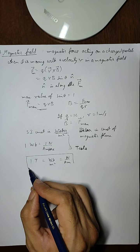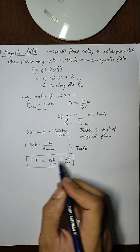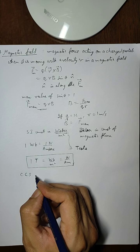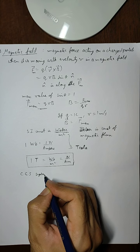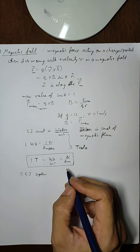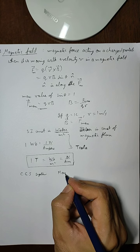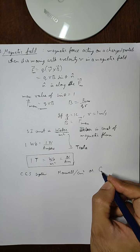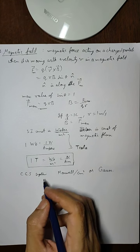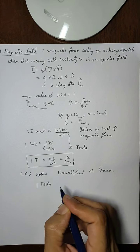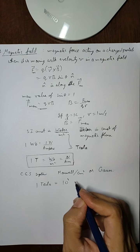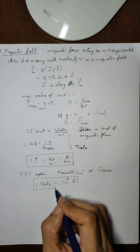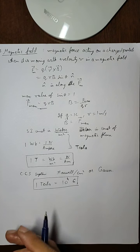This relation you can memorize—it will help us in converting one unit into another. Also, there is another unit in CGS system. This unit is called Maxwell per square centimeter, or we use Gauss also. So one Tesla—there is another relation to memorize—one Tesla equals 10 to the power 4 Gauss. In many numericals, we are going to use these conversions.